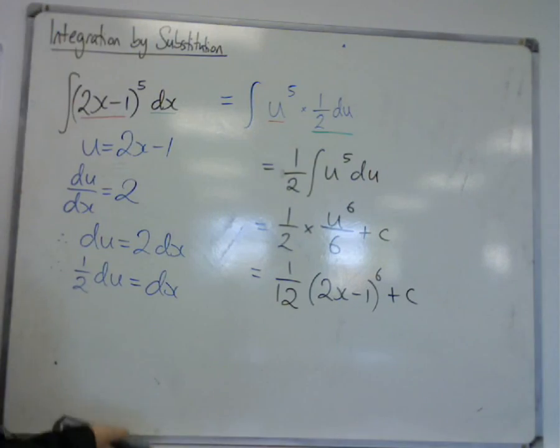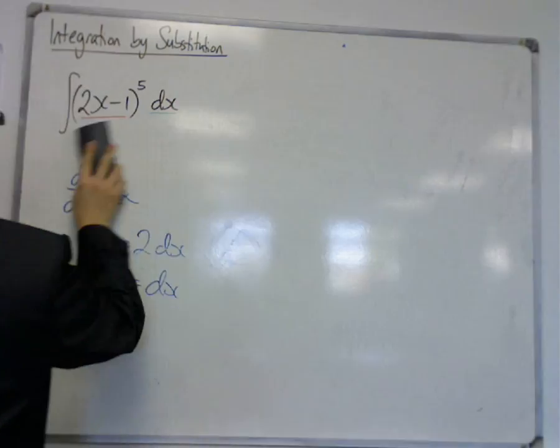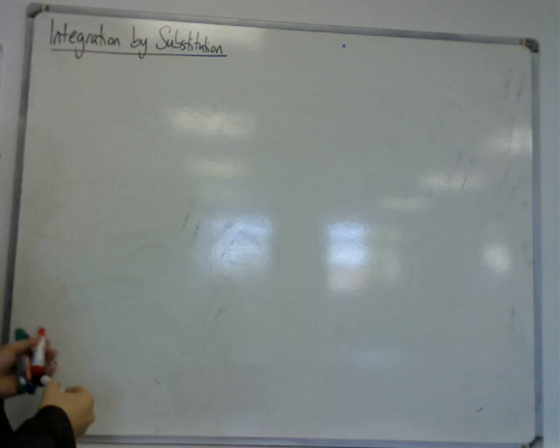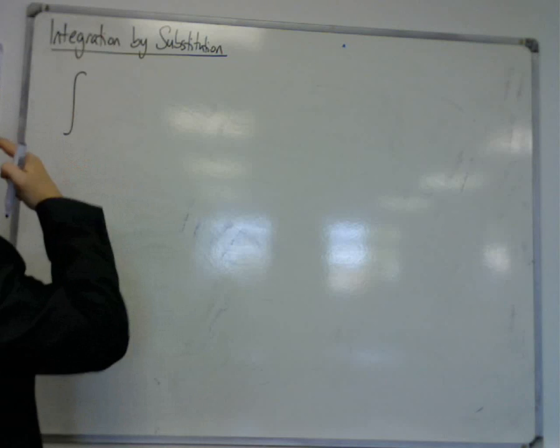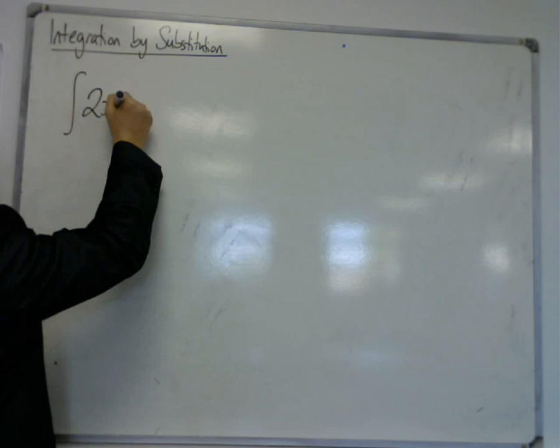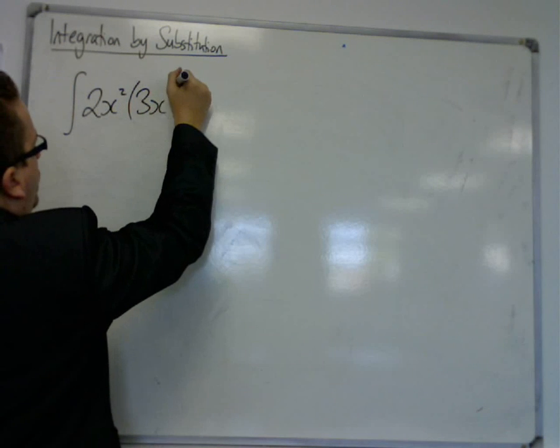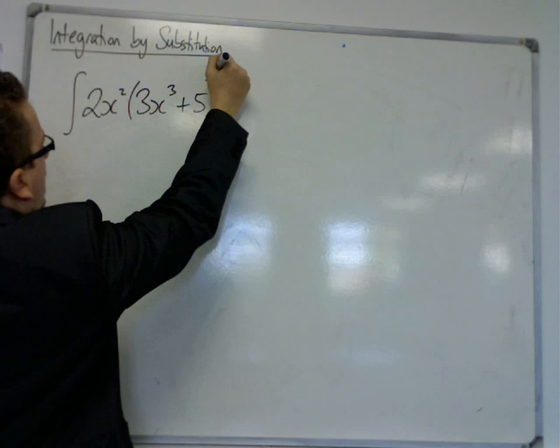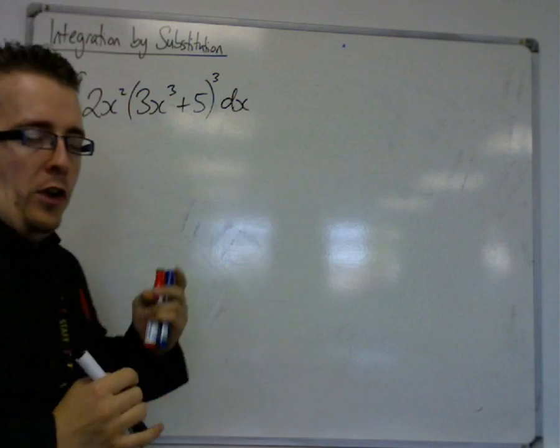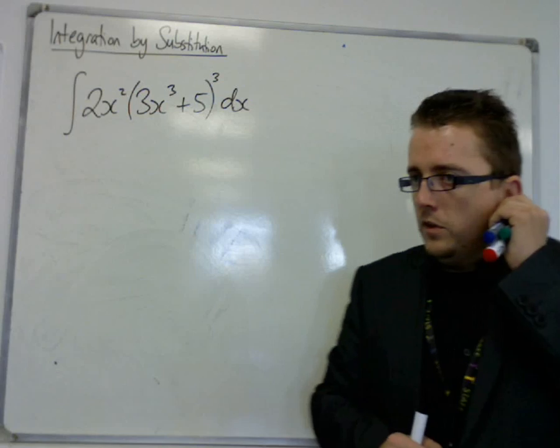One more example, just so we can get this clear. Let's have the integral of 2x^2(3x^3+5)^3 dx. So this looks a lot more complicated. And it is probably worthwhile that you think, well,